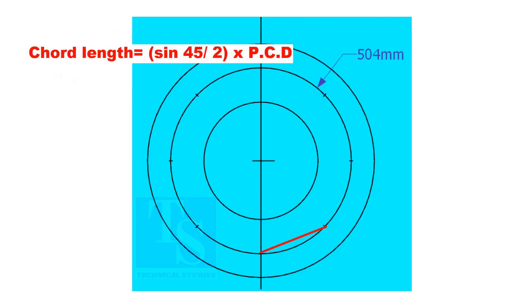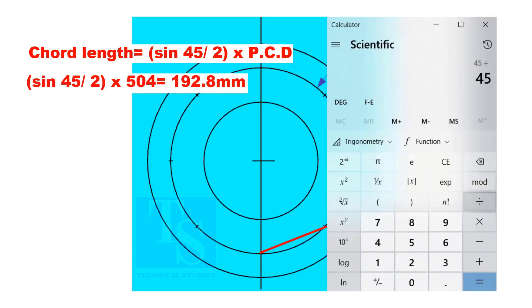Chord length equals sine 45 divided by 2, multiplied by PCD. The chord length is 192.8 millimeters.